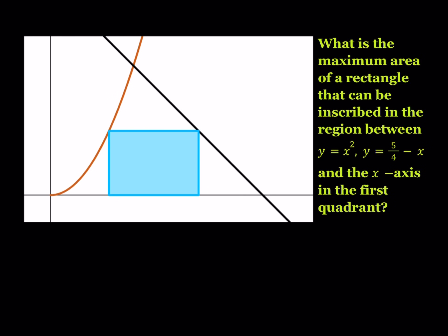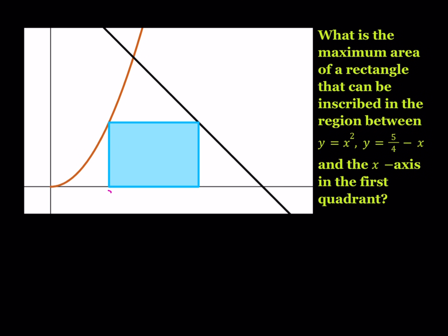I'm going to start by naming some of these coordinates. Let's call this x-coordinate here 'a' and I want to call this one 'b'. Obviously you are able to write b in terms of a, which I'll do later. The y-coordinate of the point with x-coordinate a lies on the parabola y equals x squared, so the y-coordinate of that point can be written as a squared. Notice that b is another point whose y-coordinate is also a squared, but it's on the line given by y equals 5 fourths minus x.